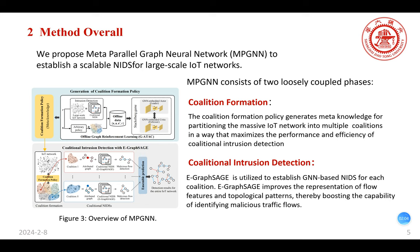To address the aforementioned challenges, we propose a Matter-Parallel Graph Neural Network (MPGNN) to establish a scalable NIDS for large-scale IoT networks. As illustrated in Figure 3, MPGNN consists of two loosely coupled phases: collision formation and collision intrusion detection. The collision formation policy generates matter knowledge for partitioning the massive IoT network into multiple subnetworks in a way that maximizes the performance and efficiency of collision intrusion detection.